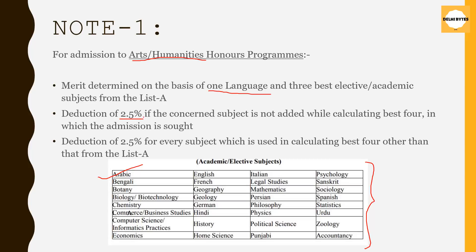Also, you can get a disadvantage of 2.5% — for example, if you are seeking admission in History Honors and you have not included History as a subject while calculating your best 4, you will get a disadvantage of 2.5%.